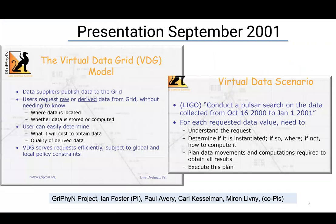In 2001, we developed a model called the virtual data grid, which allowed scientists to come into the system and ask for a data product at a high level — for example, gravitational wave results from a particular time period — without having to know where the data is located or whether it's already been computed or stored somewhere. The system would figure out what the user wanted, look in the environment to see whether the data was already accessible or needed to be computed on demand, and then give it to the user. In the case of LIGO, the user would make a request for a false search over a particular time period, and the system would look at the replica catalogs, then either deliver the data or design a plan to get it.